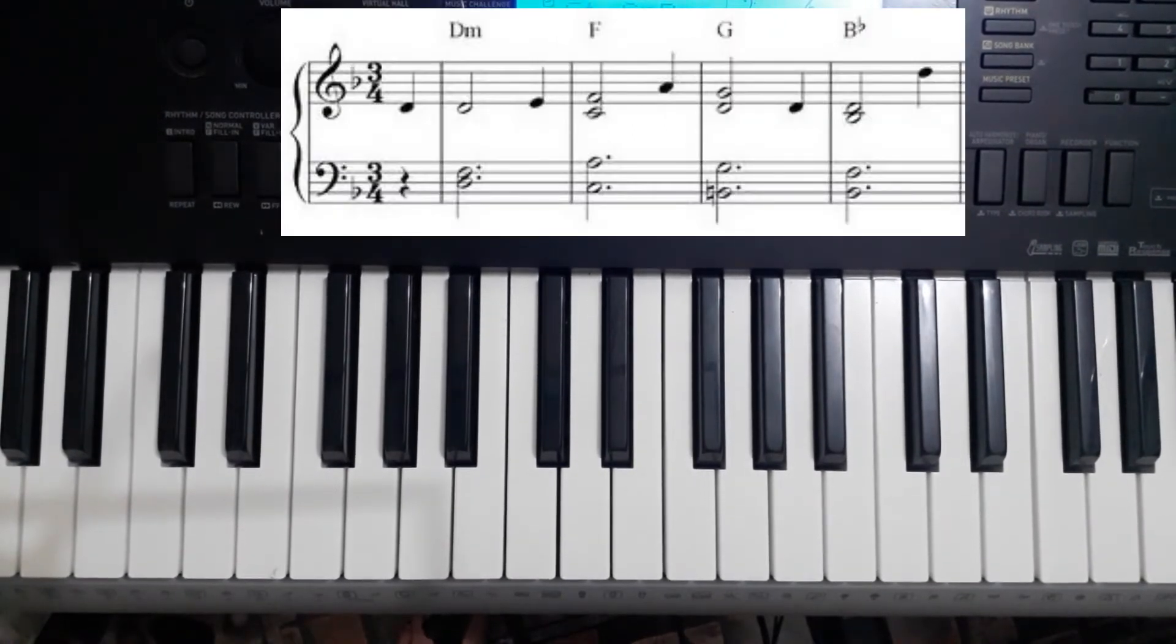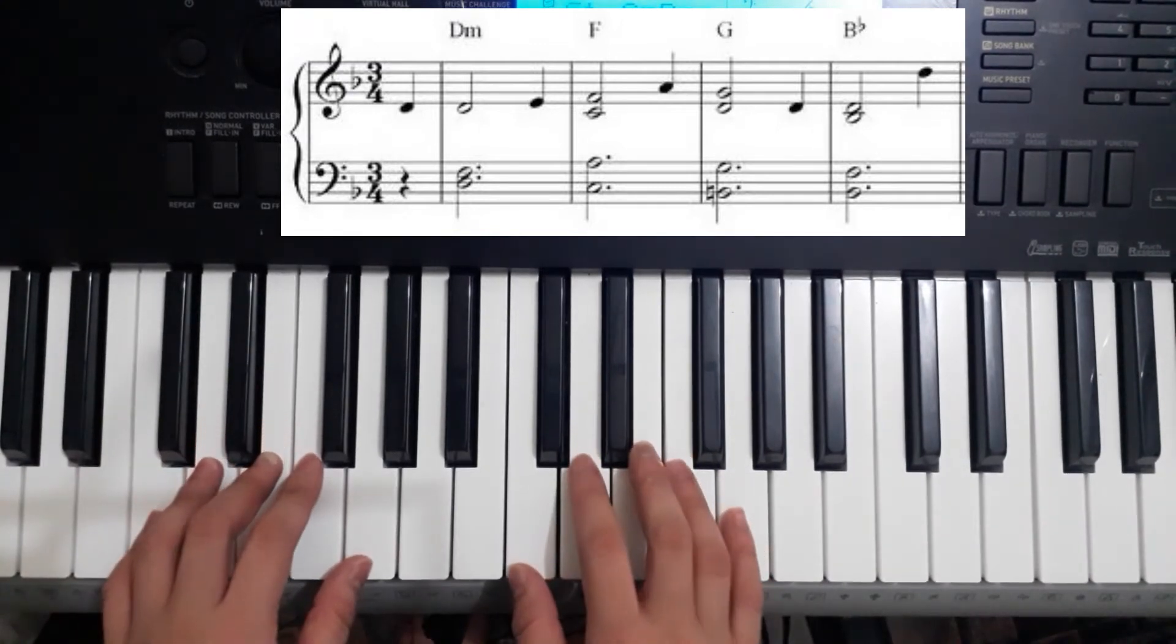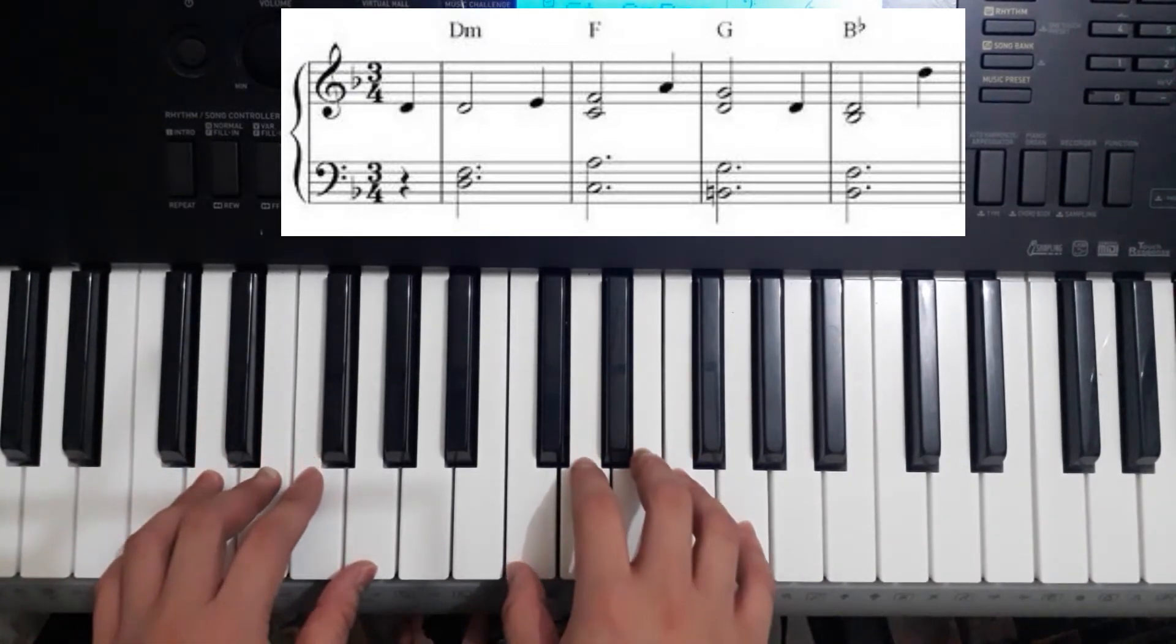So on the first bar, you can see that there's a D crotchet on treble clef and a crotchet rest on the bass clef. So we're going to go on the piano and set our hands pressing the D.